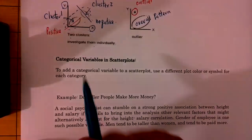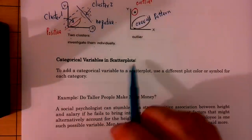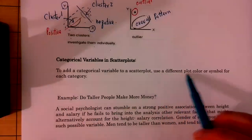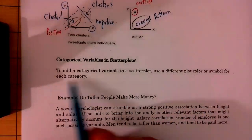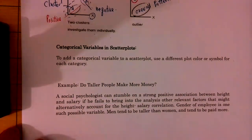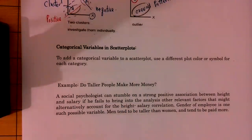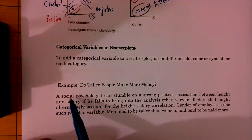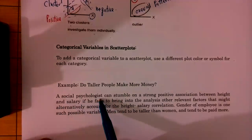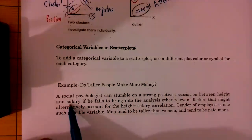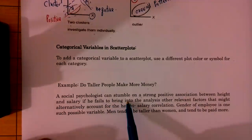Now let's look at the next topic: categorical variables in scatter plots. To add a categorical variable to a scatter plot, we can use a different plot color or symbol for each category. Let me give you a concrete example. Do taller people make more money? A sociopsychologist can stumble on a strong positive association between height and salary if he fails to bring into the analysis another relevant factor.